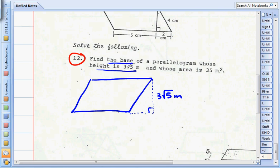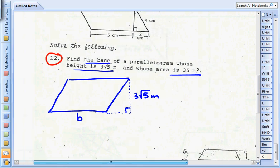I'm looking for the base, so I'll need a variable for that. I'll choose b for the base, and I'm given the area. Area is 35 meters squared.